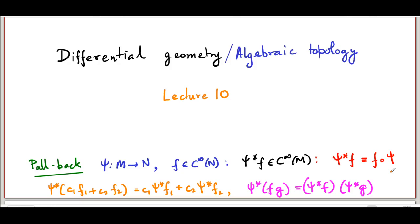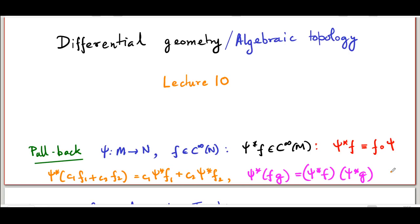Now, two important properties of this pullback function are going to be of importance to us. The first one is that the pullback function shy-star is a linear function. That is, pullback is a function between C-infinity of N and C-infinity of M. And if you take a linear combination of members of this set, that is, take a linear combination like c1 f1 plus c2 f2, c1 and c2 being real numbers, and f1 and f2 being smooth functions on N, then it can be easily shown from this definition that this is actually equal to c1 times the pullback of f1, shy-star f1, plus c2 times shy-star f2, the pullback of f2.